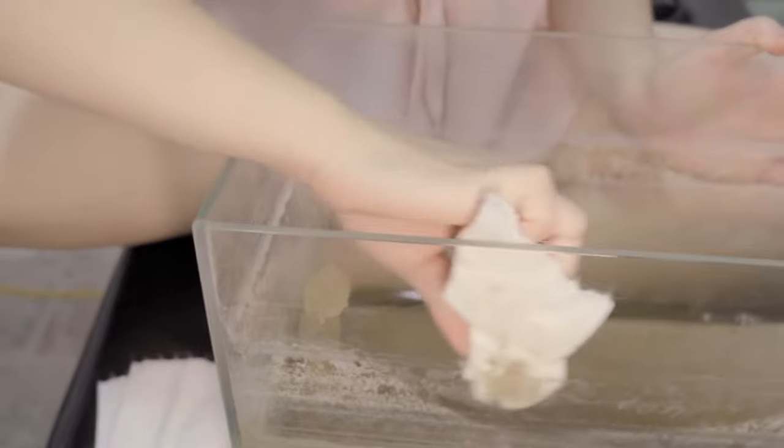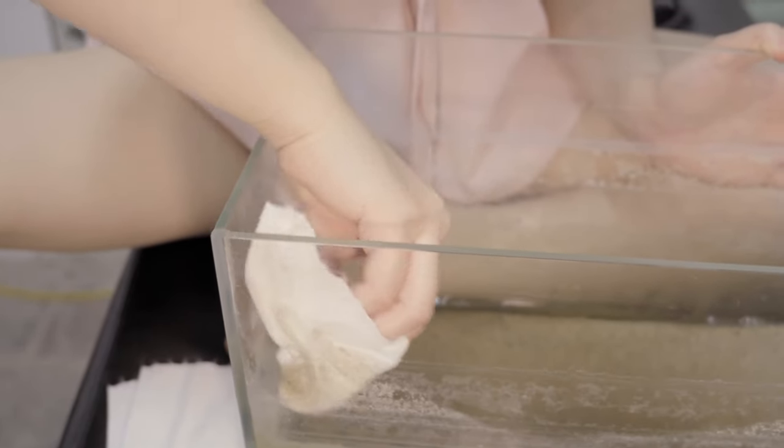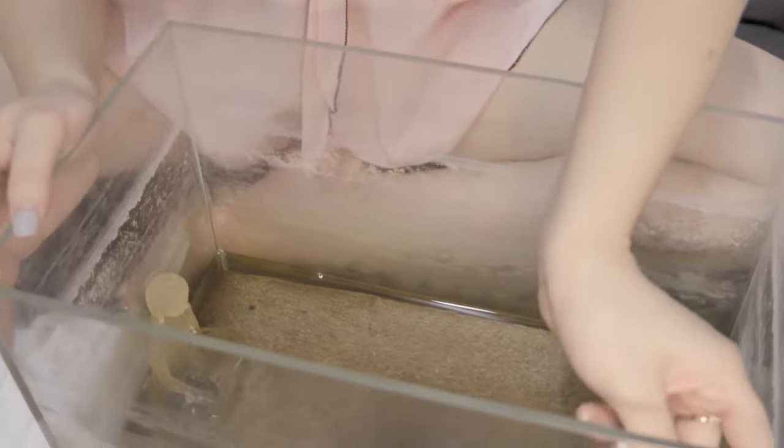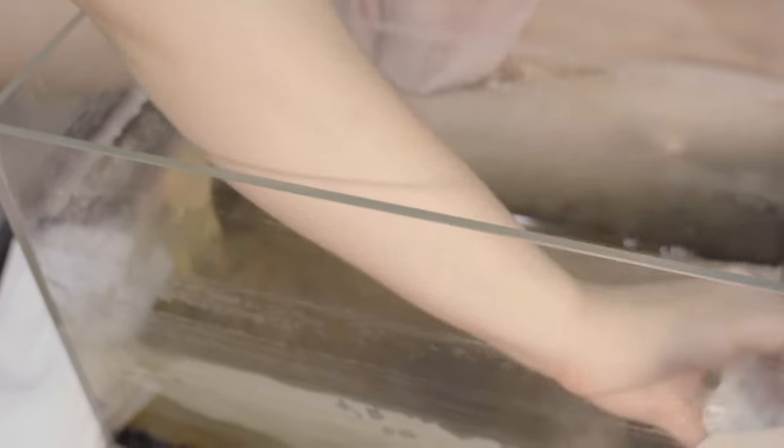Step two, remove old water. One, siphon old water - use a fish tank siphon to remove old water from the tank. Two, remove decorations - take out interior decorations, lights, and filtration systems for convenient cleaning.